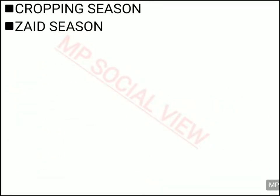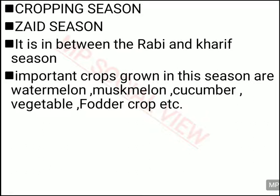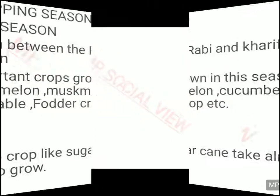Now we are going to see about the Zaid season. This is the third season in Indian agriculture. Mostly we used to have Rabi and Kharif seasons, but in between these two you can also do cultivation in the Zaid season — that middle period is called the Zaid season. In the Zaid season you can grow watermelon, muskmelon, cucumber, vegetables, fodder crops, etc. Some crops take the whole year for their production process and are also grown in India.